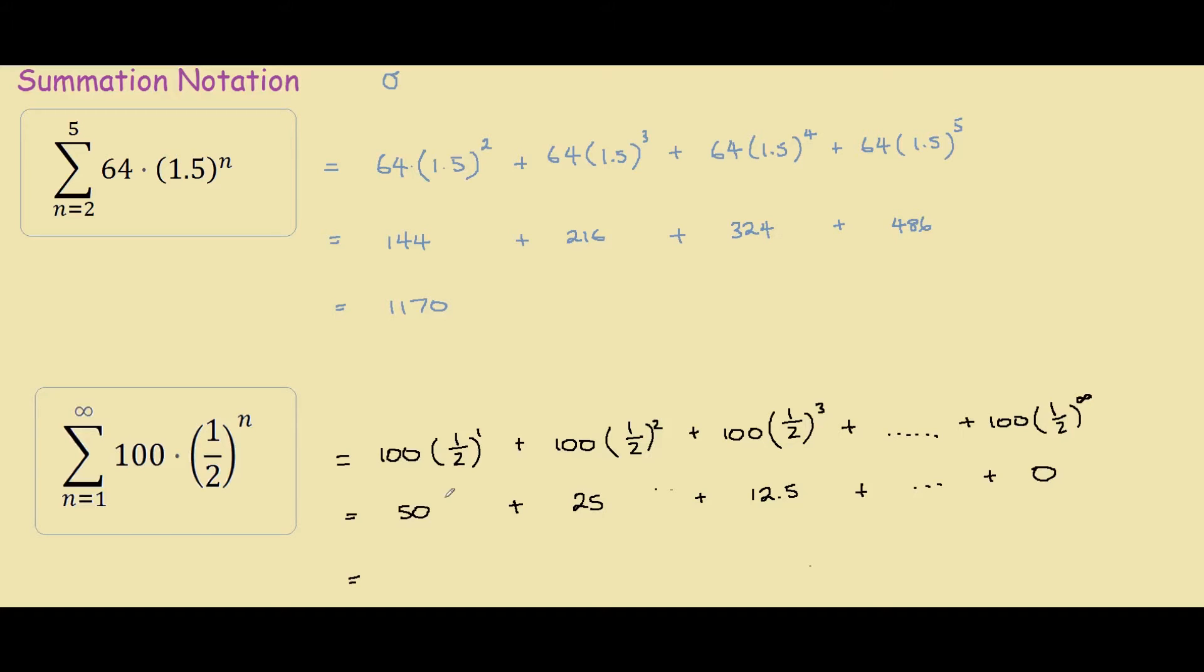So what does this converge to? If you keep adding halves of 12.5, then half of that, half of that, half of that, you will eventually get up to very, very close to 100.